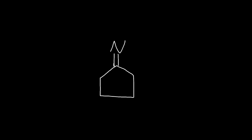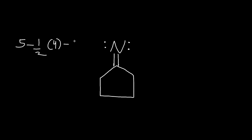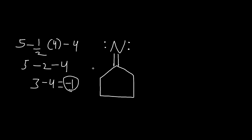If we have a cyclopentane structure here, with nitrogen — to calculate the formal charge: nitrogen has five valence electrons, minus two bonds, so four electrons, minus two lone pairs which is four electrons. Half of four is two, so five minus two is three, minus four equals negative one. So nitrogen here has a negative charge.